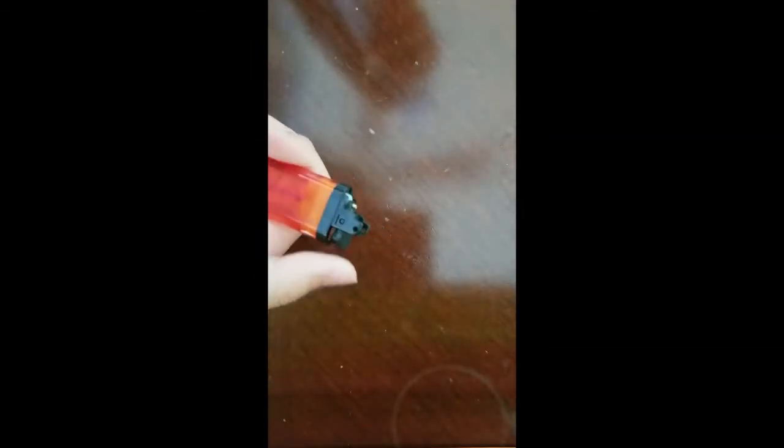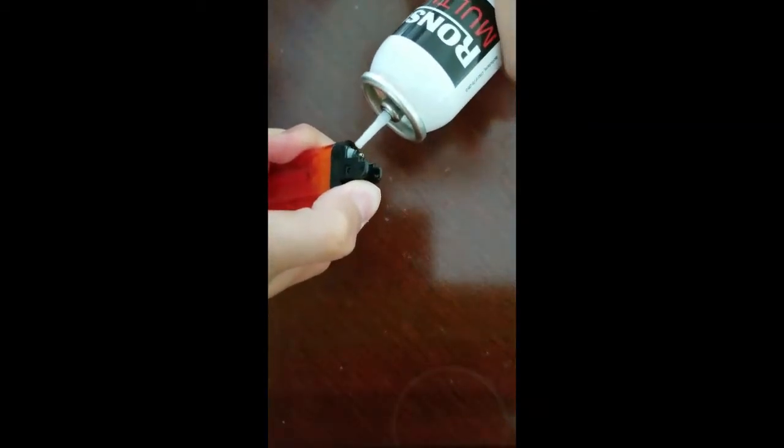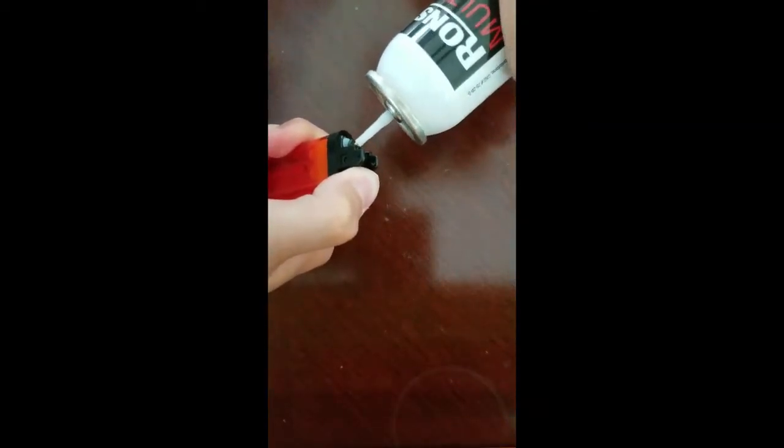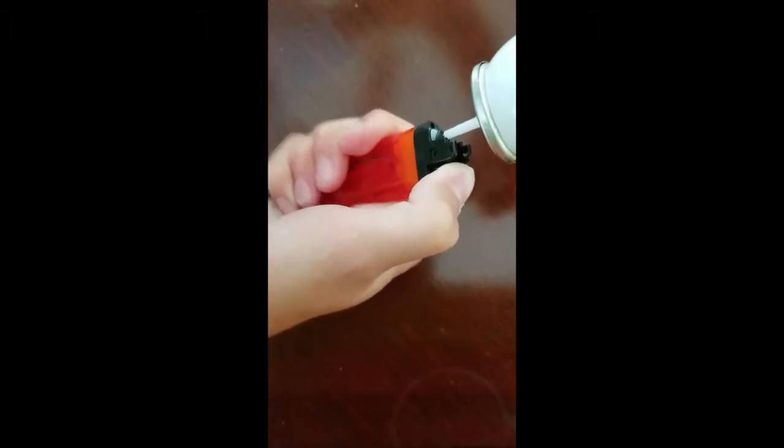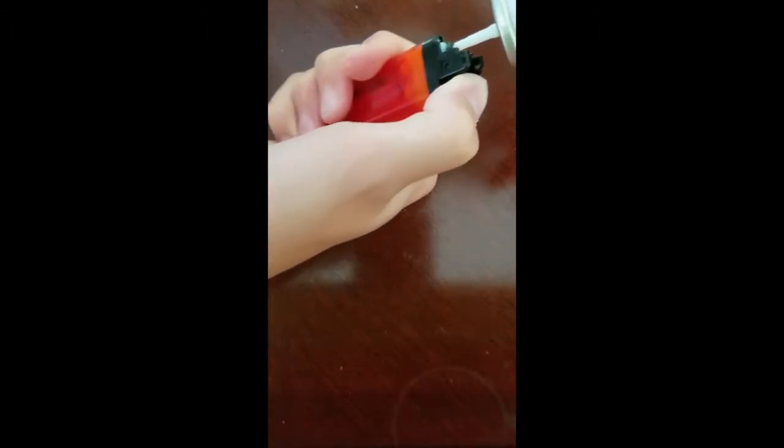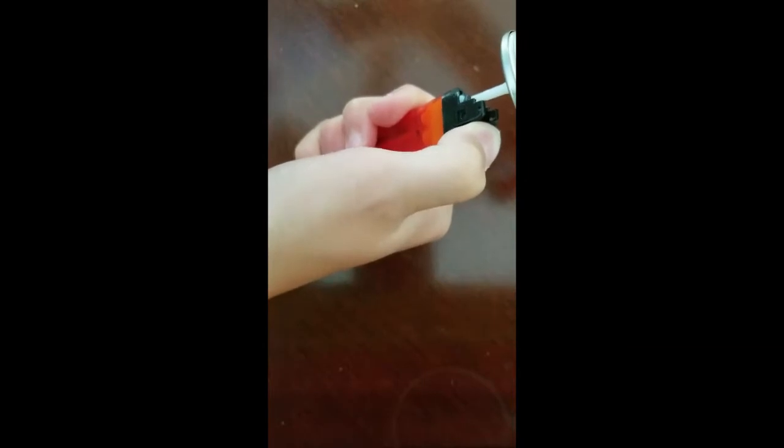First, you need to press down on the trigger. Then you take the butane or air duster, put it on top of the valve, and just push down.